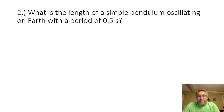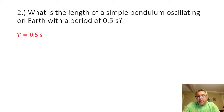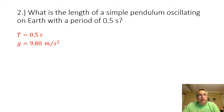Problem two: what is the length of a simple pendulum oscillating on Earth with a period of 0.5 seconds? We are given the period of 0.5 seconds. Again, we're on Earth so gravitational acceleration is 9.80 meters per second squared, and we are being asked to solve for the length.